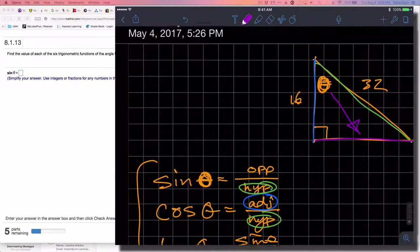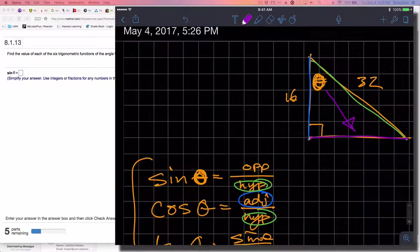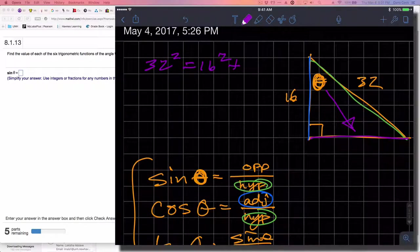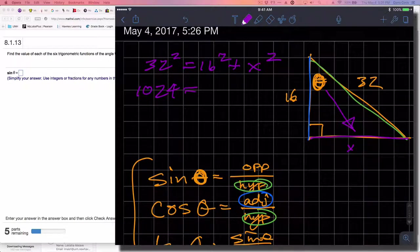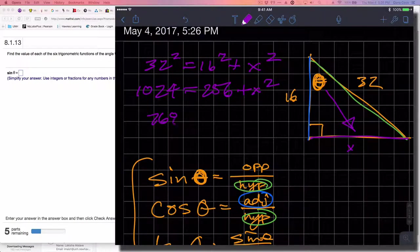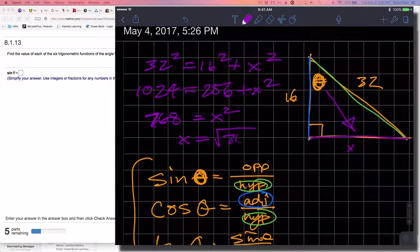I have to determine that using Pythagorean Theorem because this is a right triangle. So 32 squared equals 16 squared plus X squared. 32 squared is 1024, and 16 squared is 256 plus X squared. 1024 minus 256 is 768. I do not believe that is a perfect square.